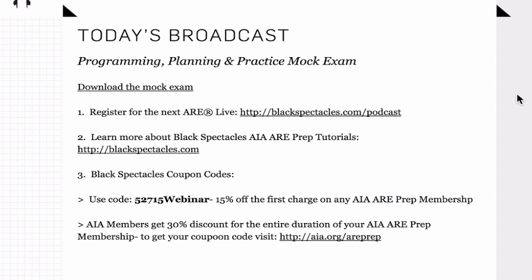And for those of you who are ready and want to go ahead and get busy preparing for the ARE, you can use a 15% coupon off the first charge on any AIA ARE prep membership with code 527-1215 webinar. And that'll expire on June 15th. And of course, if you're already an AIA member, you can visit aia.org/areprep to get a 30% discount for the entire duration of your AIA ARE prep membership, not just the first charge. And that also expires on June 15th.